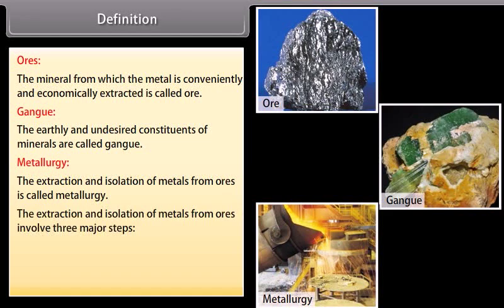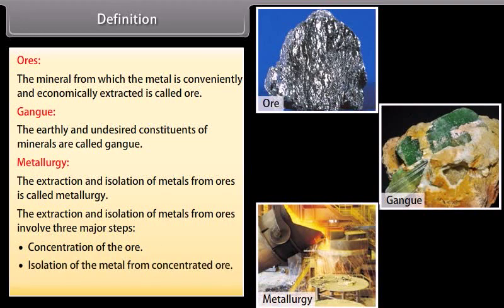The extraction and isolation of metals from ores involves three major steps: concentration of the ore, isolation of the metal from concentrated ore, and purification of the metal.